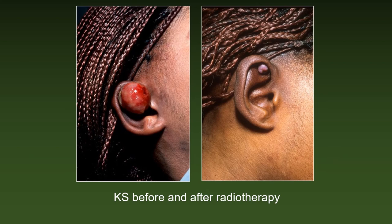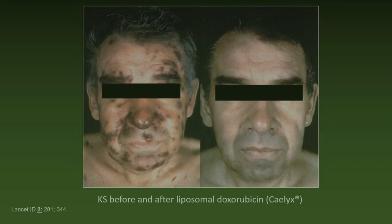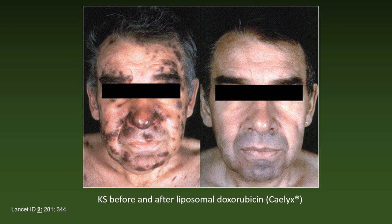KS is highly radiosensitive. Isolated troublesome tumors can, for instance, be treated with 8 Gray of 6 to 9 mega-electron-volt electron beams in a single fraction. Here is an example before and after such irradiation. As a rule, however, KS is disseminated and local treatment does not suffice. The most frequently used IV regimen is liposomal doxorubicin at a dose of 50 mg per square meter of body surface, given every four weeks.